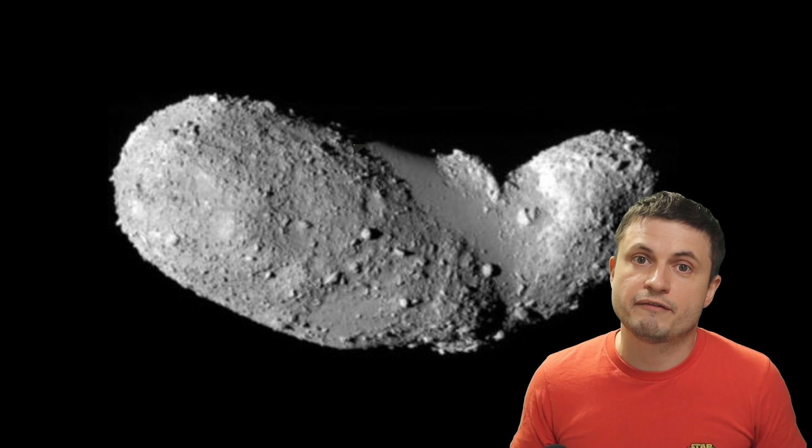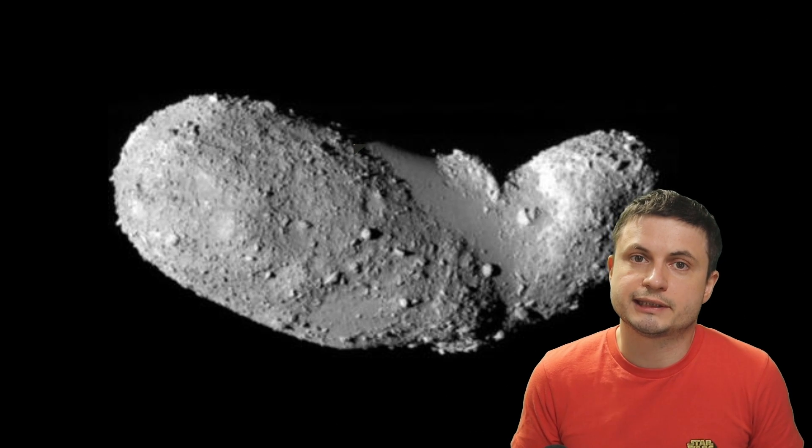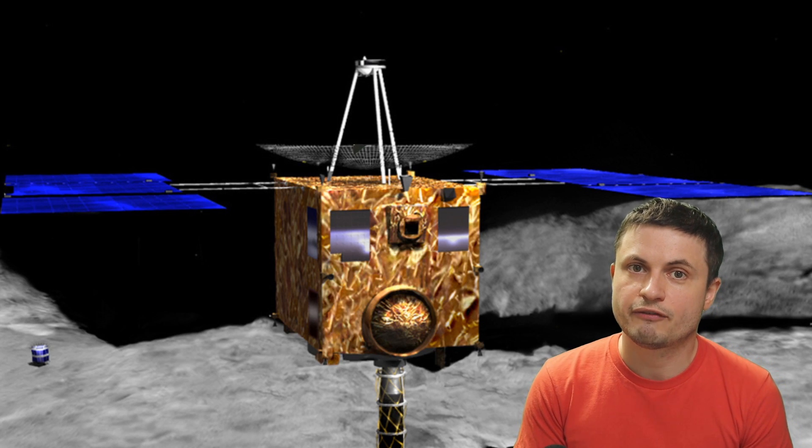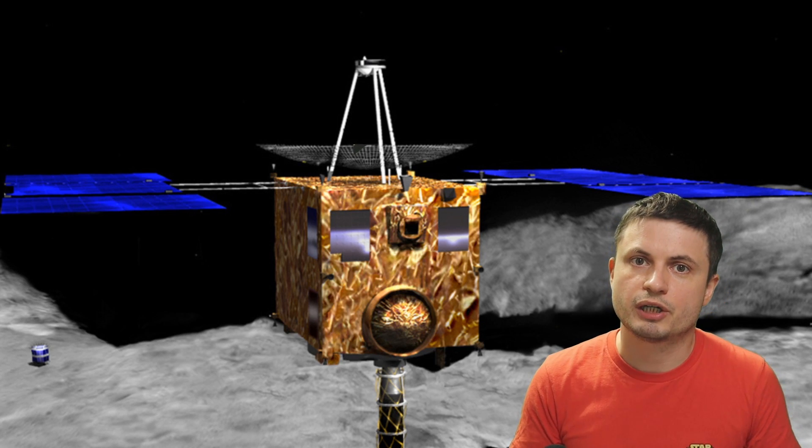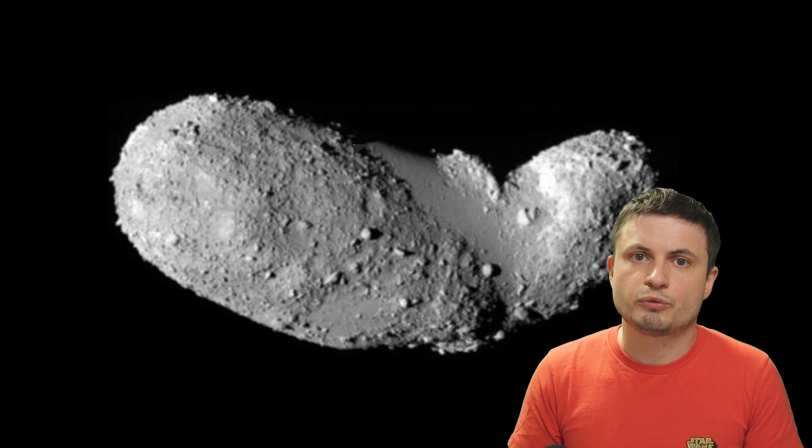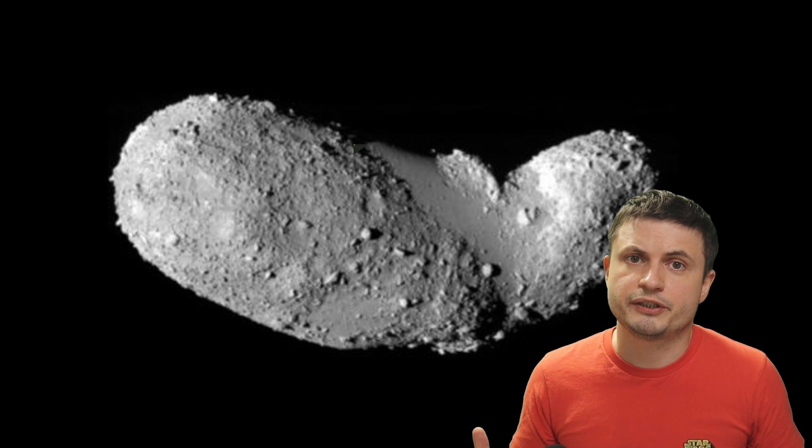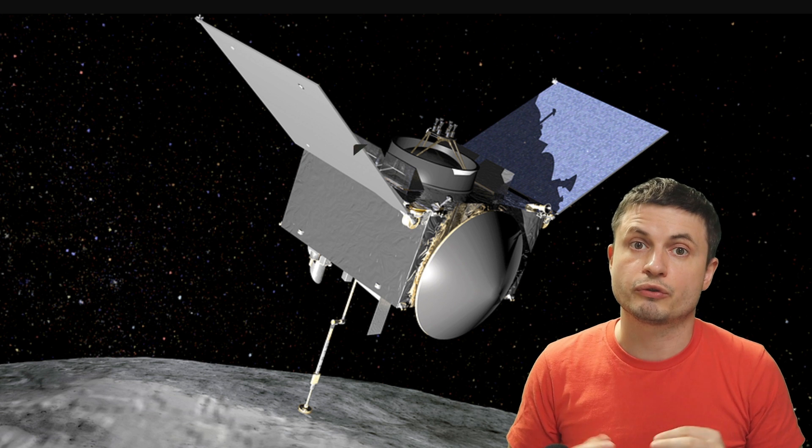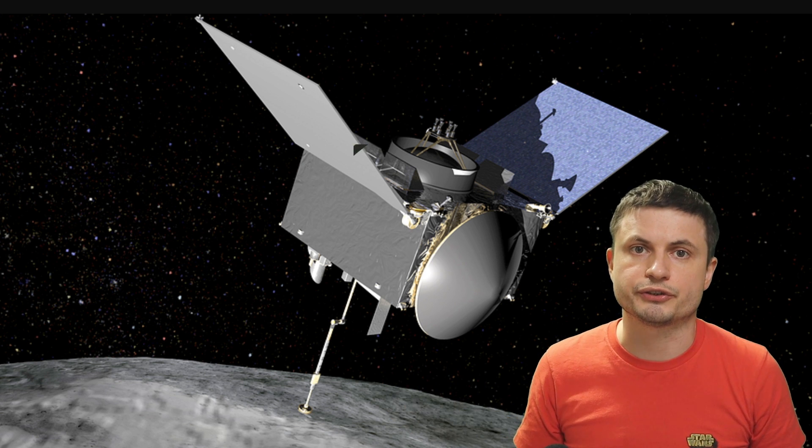And because this was the first ever asteroid retrieval mission it also allowed us to collect samples we've never had before, allowing the scientists to discover that first of all this asteroid seemed to have been a part of a much larger asteroid. In other words it may have separated from a larger piece during for example a collision or some sort of a separation event, but most importantly it allowed Japanese scientists to test various technologies in terms of retrieval, in terms of propulsion and establishing a lot of interesting techniques that were later used in other missions including OSIRIS-REx.